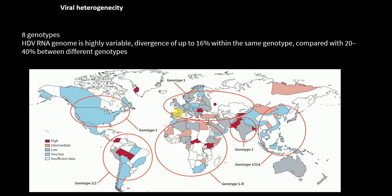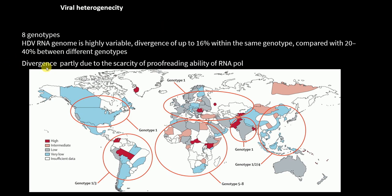This picture shows the distribution of different genotypes throughout the world. Genotype 1 is prevalent in one region, genotypes 1 and 3 in another, genotypes 5 to 8 in another part, and genotype 1 in South Asia including India and Nepal. Different genotypes are prevalent in different parts of the world, and the viral genome is very heterogeneous. Scientists believe this divergence is partly due to the lack of proofreading ability of RNA polymerases.